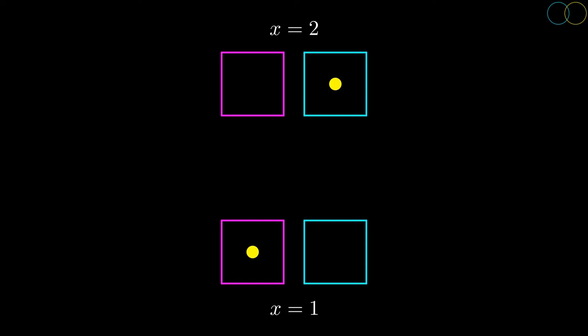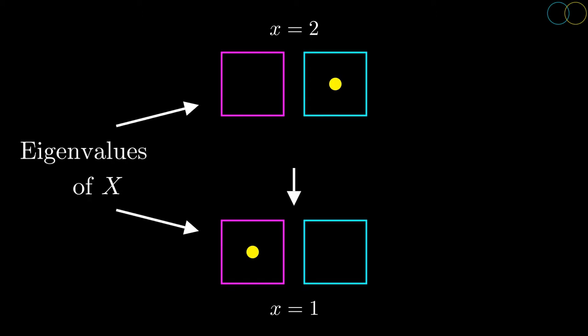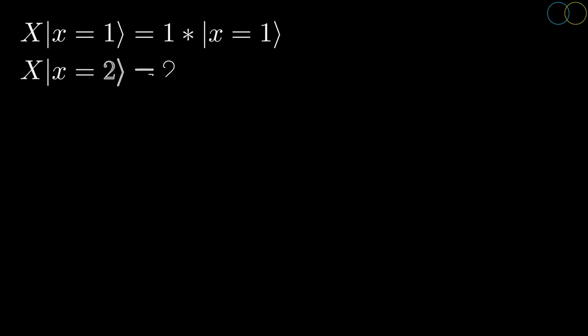As an example, suppose we have a system where there are two different positions that a particle can be at, that we will call x equals 1 and x equals 2. Position, being a physical quantity, has an associated linear transformation that we will write as capital X. When a measurement of the position is made, the result will be random, having some probability of being any of the possible positions. These possible positions are actually the eigenvalues of the position operator — the two eigenvalues are 1 and 2, corresponding to the eigenvectors that are the quantum physical vectors representing each position of the particle.